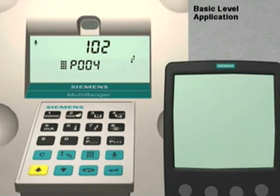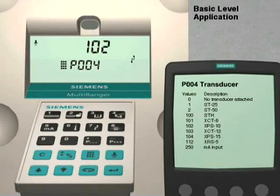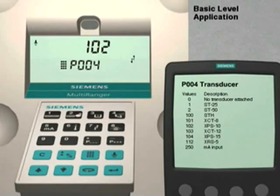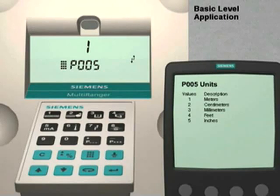Use the up arrow key to go to parameter number 4. Parameter 4 optimizes the multi-ranger for the specified input. The input can be either a transducer or a milliamp input source. In our application, we are going to use an Echomax XRS 5 transducer. The XRS 5 transducer has a numeric value of 112. We enter 112 and then the Enter key to set this value. Press the up arrow key to go to the next parameter.